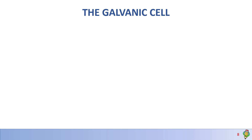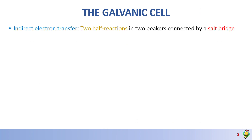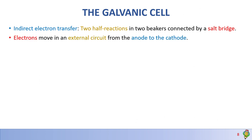Now we will talk about the galvanic cell, which is an indirect electron transfer involving two half reactions happening in two beakers connected by a salt bridge. In this case, electrons move in an external circuit from the anode to the cathode.